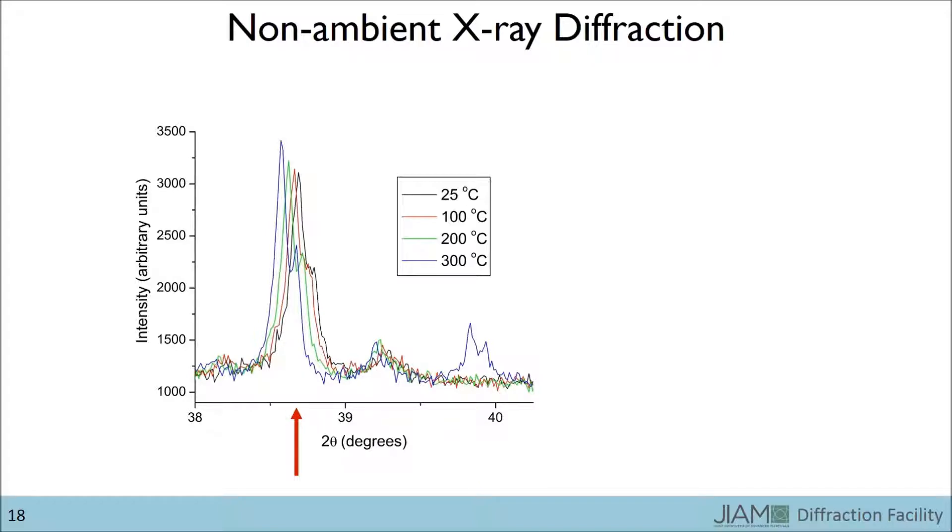Looking at the peaks around 38.7 degrees 2 theta, we can see that as the temperature increases, the position of the peak shifts to lower 2 theta, indicating an expansion of the lattice parameters.